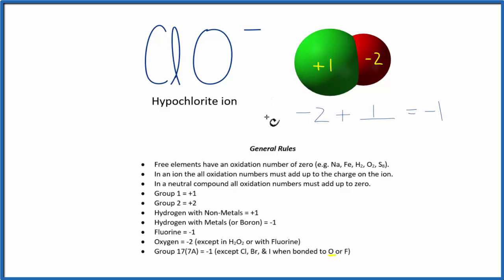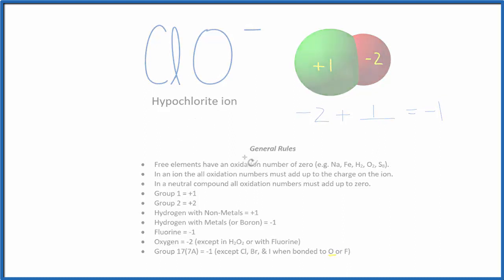This is Dr. B with the oxidation numbers for each of the atoms here in ClO minus hypochlorite. Thanks for watching.